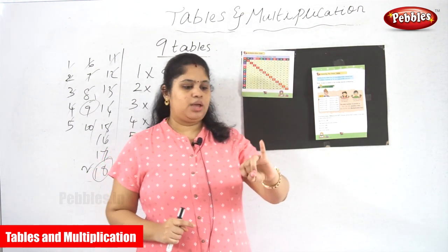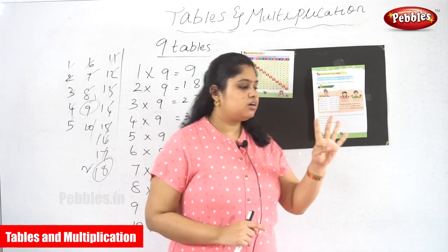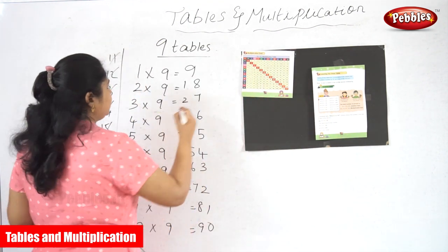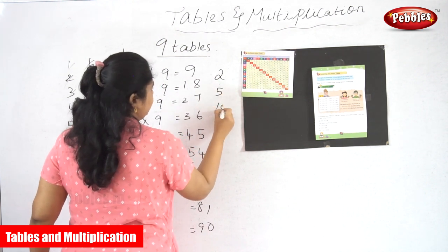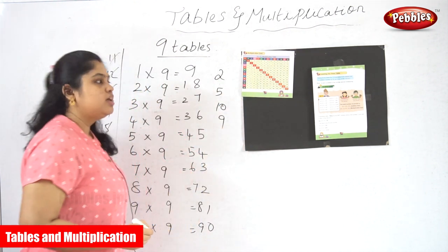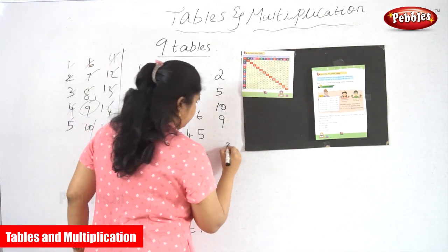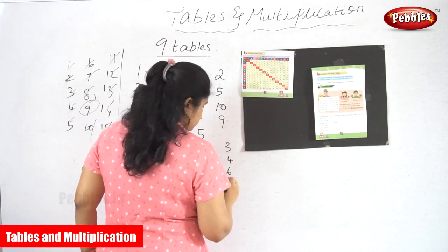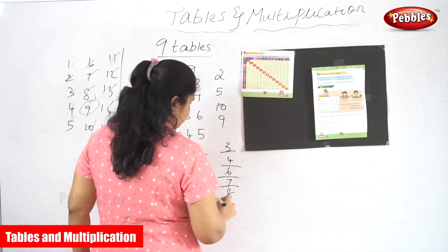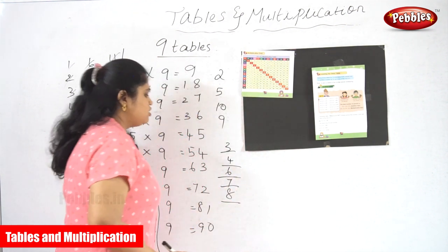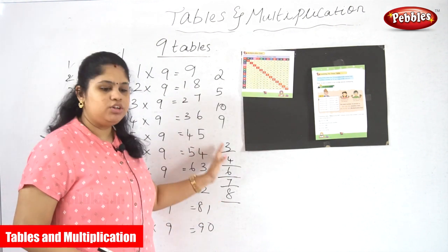We have seen the two table, five table, nine table, and ten table, so we have completed two, five, ten, and nine. The remaining tables to learn are three, four, six, seven, and eight. If you want to learn three to eight, I will tell you about those as well.